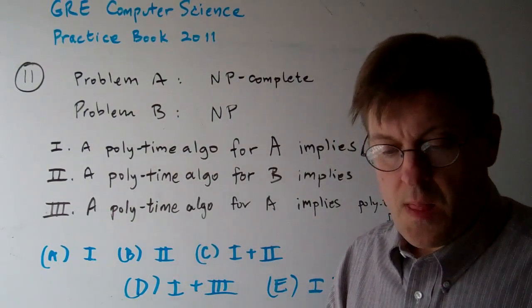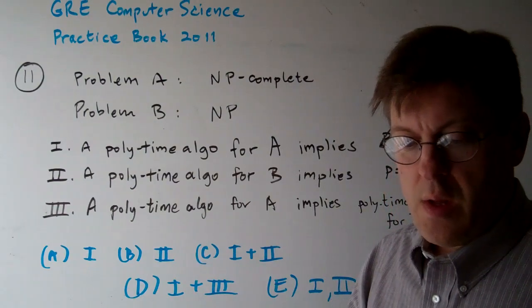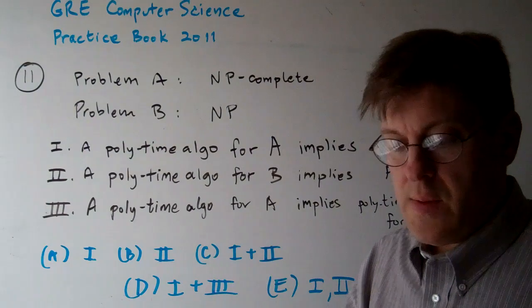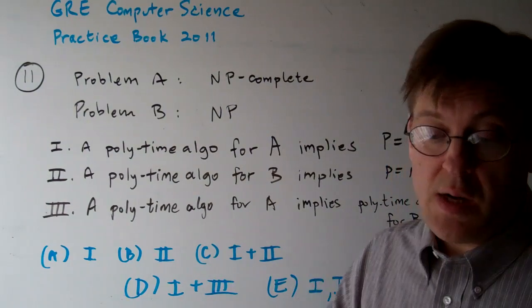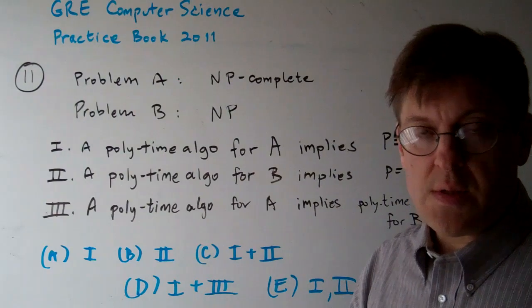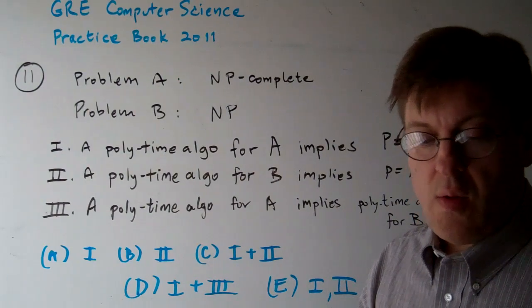Question 11. Suppose a problem A is NP-complete and problem B is in NP but not necessarily NP-complete. Which of the following statements are true?